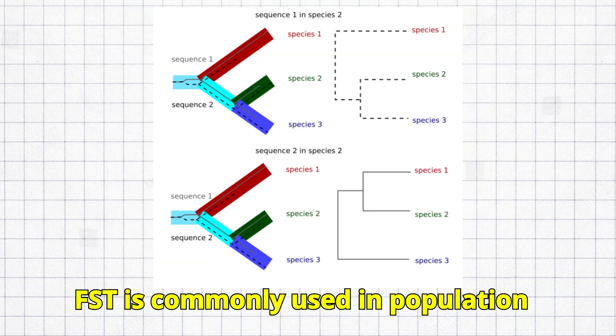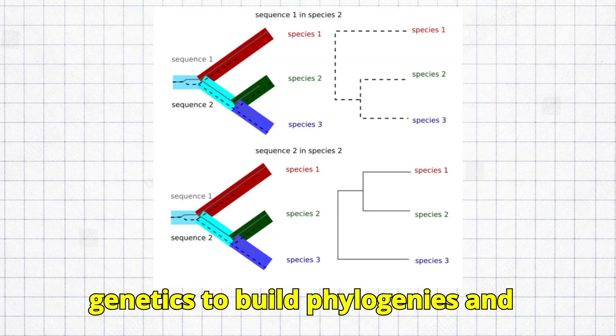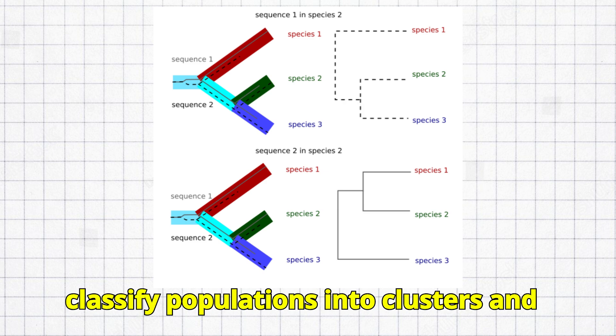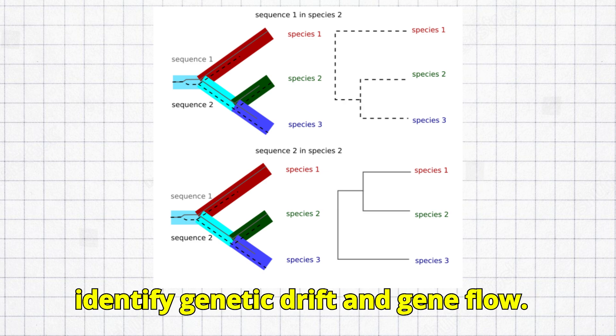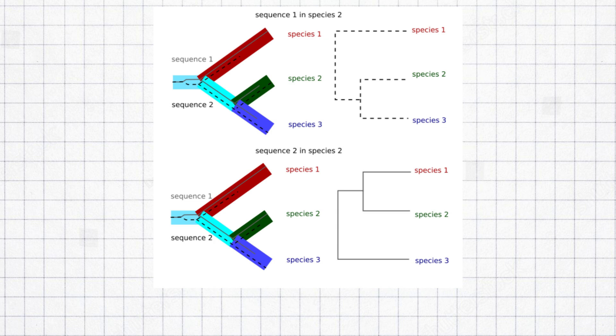FST is commonly used in population genetics to build phylogenies and classify populations into clusters and identify genetic drift and gene flow.